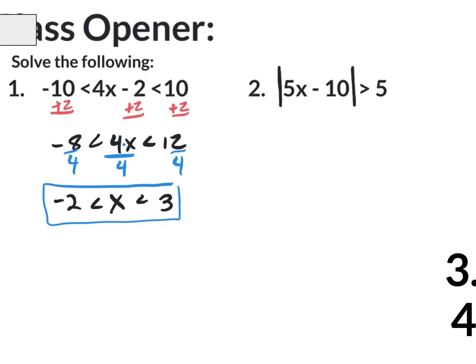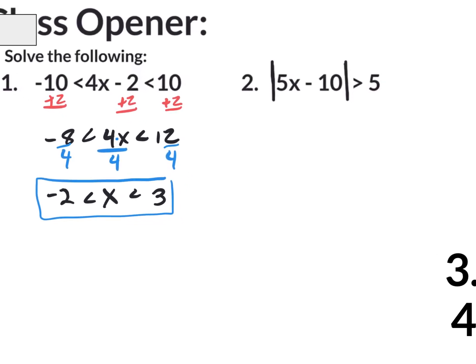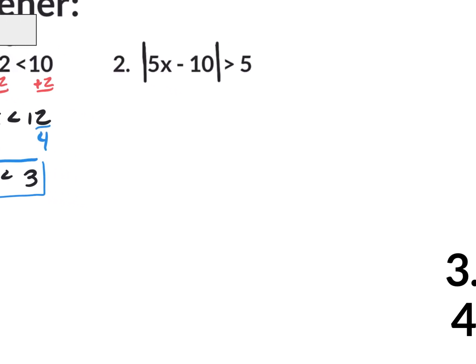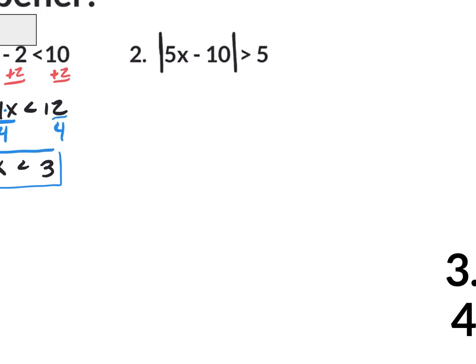Let's move on to number 2. Number 2 is an absolute value inequality. Step 1 on any absolute value equation or inequality is to isolate it — to get it by itself. We do not have a times 2 or times 3 out here in the front; it doesn't say 3 times the absolute value, so we don't have to worry about getting rid of a 3.